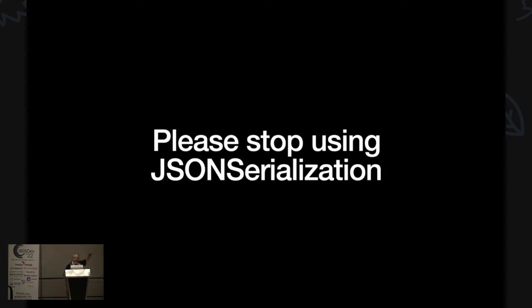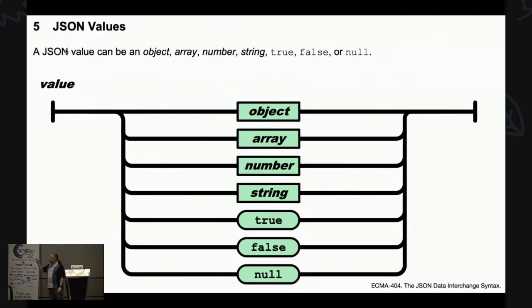Those are great tools if you have model objects, which is what people do 90% of the time. But what if you just have JSON? You don't want to think about model objects — you just want JSON. Stop using JSONSerialization — it comes from the Objective-C days and returns Any. JSON objects are not Any. They can be one of a very short list: an object, an array, a number, a string, true, false, or null. That means a raw JSON decoder should return an enum — something like a JSONValue enum.